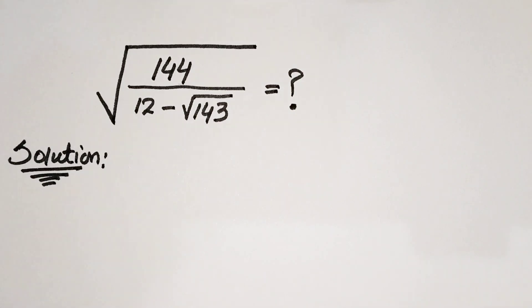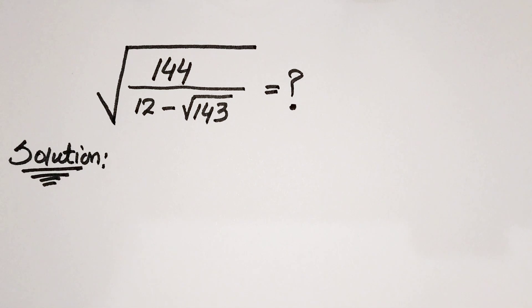Hello everyone, welcome back to Minimals Club. Today we have a nice square root problem which is square root of 144 over 12 minus square root of 143. We have to solve and simplify this problem.